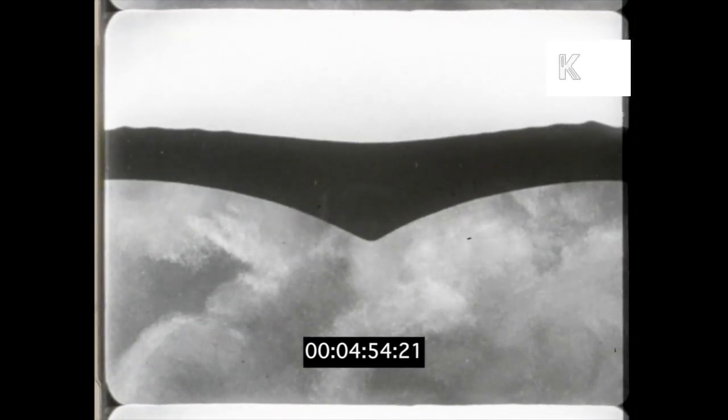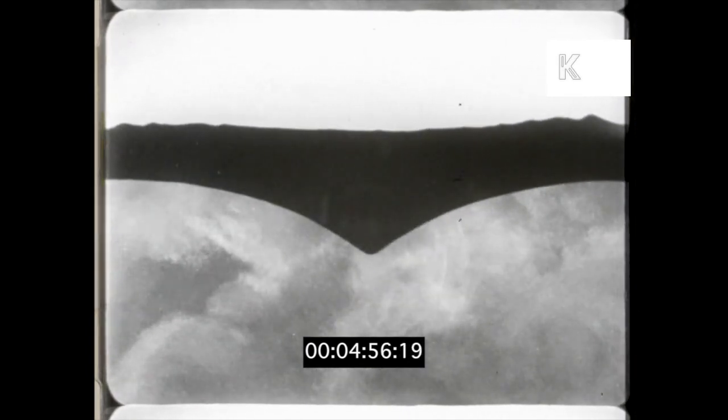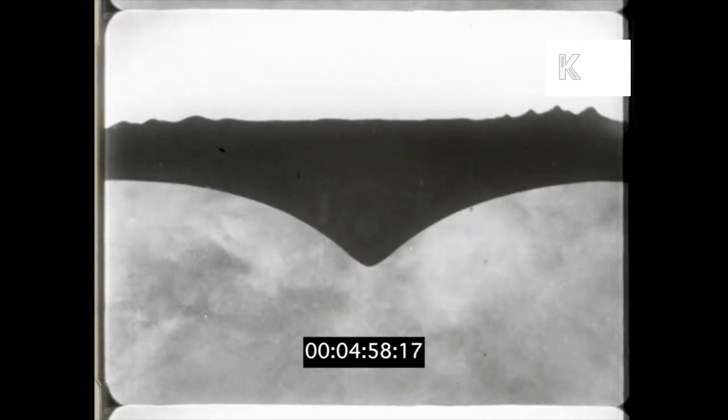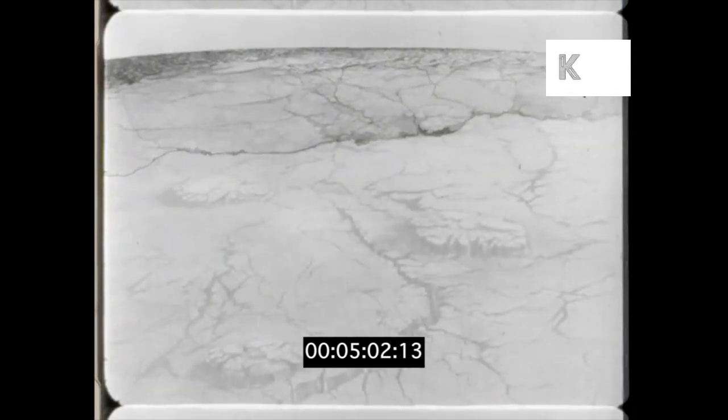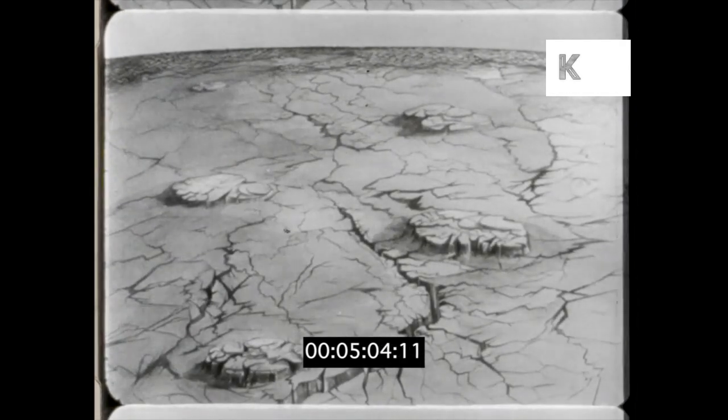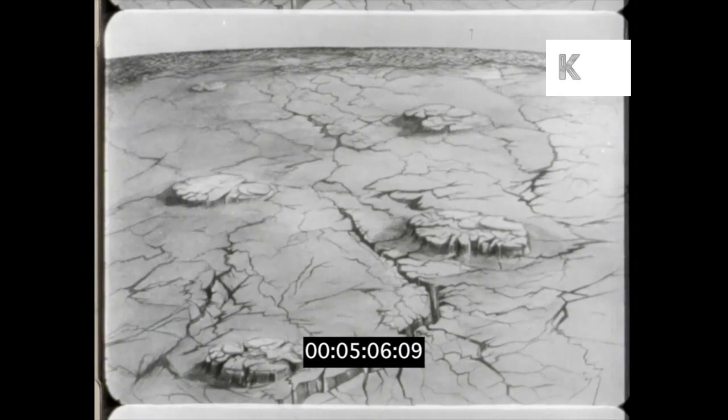Then the movements inside the earth changed and mountains grew up just to the south of the coal swamp. They lifted the swamp clear of the water and turned it into a desert. This was the end of the coal forming age.